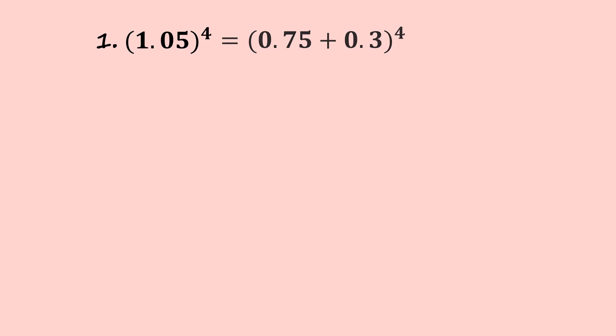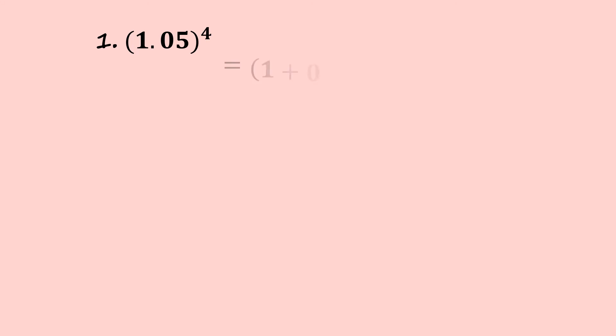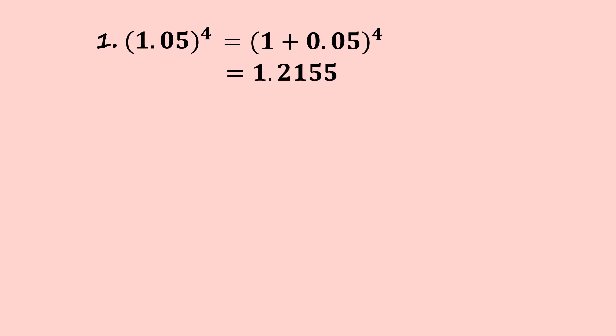For question one: 1.05 to the power of 4 is not a binomial because a binomial must have two distinct terms. So we split it — not equally, since 0.525 plus 0.525 are not distinct. We use 1 plus 0.05 instead. The final answer is 1.2155 to four decimal places.